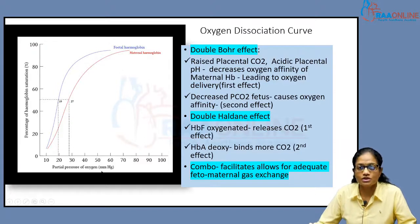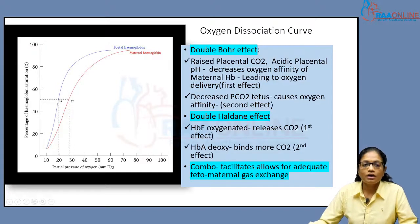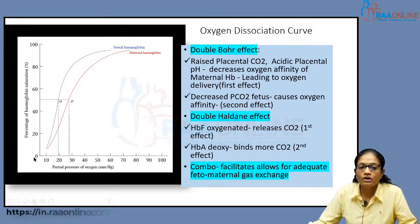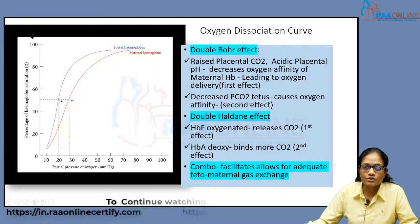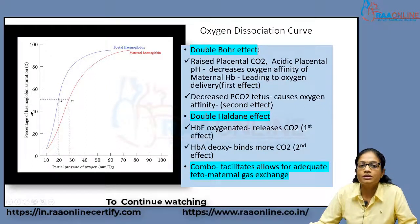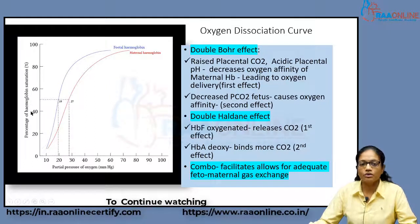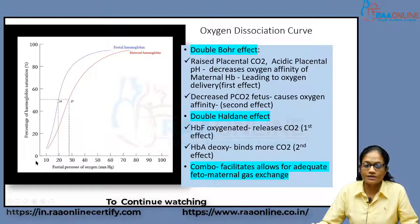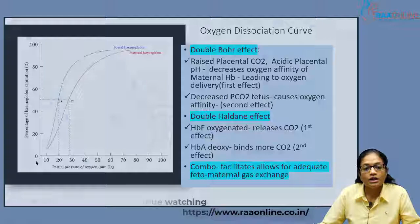Let us look at the oxygen dissociation curve. On the x-axis, you have partial pressure of oxygen in millimeters of mercury. On the y-axis, you have the percentage of hemoglobin saturation. You should be absolutely thorough with this graph because it is a bottom-line of anesthetist physiology knowledge.